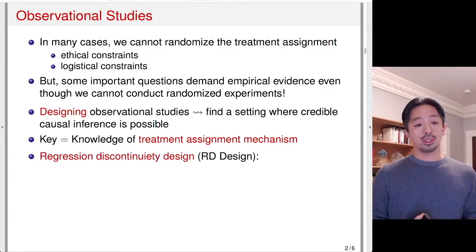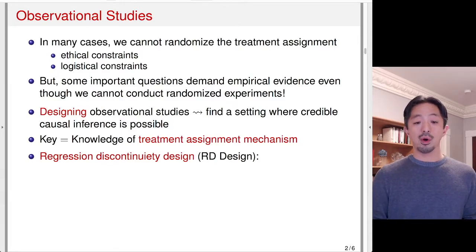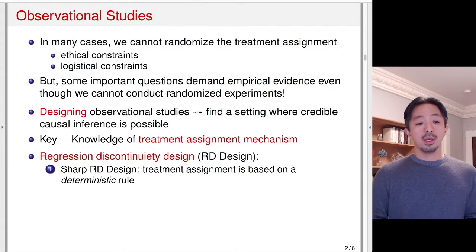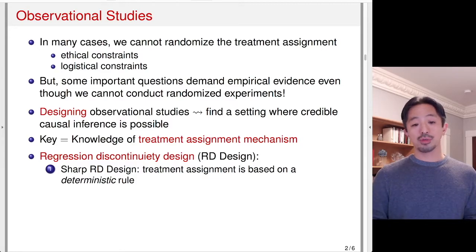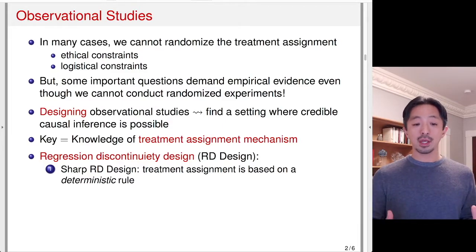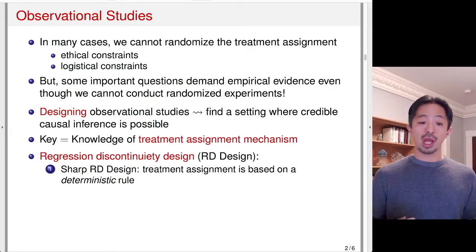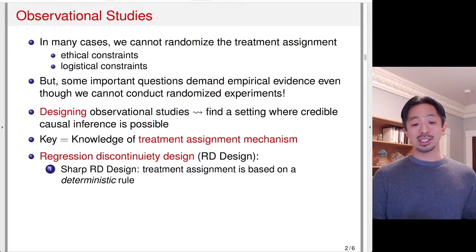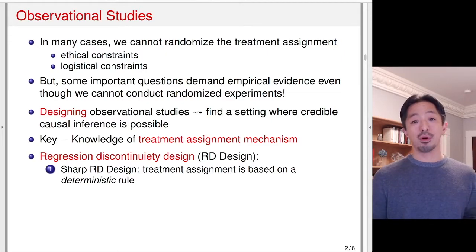When you find such a setting, we have a much better chance of drawing credible causal inference. One very important design is called regression discontinuity design, or RD design. In the sharp RD design, which I'll discuss in this lecture, the treatment assignment is based on a deterministic rule, and that rule is known to the researcher. This is an extreme setting where we have full knowledge of the treatment assignment mechanism, even though we have no control over who gets the treatment — we know how the treatment is assigned, and it's a deterministic rule, as opposed to some probabilistic rule.